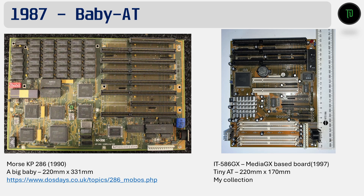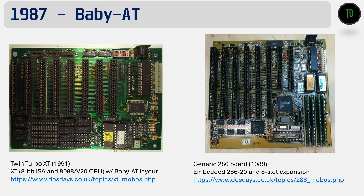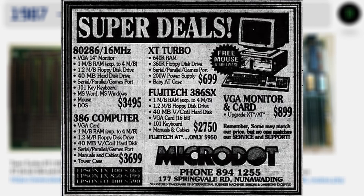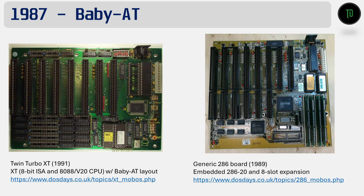Throughout the 1980s and 1990s, the Baby-AT sizing varied from the large size of the Morse KP286 at 331 mm to the itty-bitty late 90s Media GX board almost half the length at 170 mm. During this same time period, a few things were happening in the wider PC market which impacted the design and sale of these boards. Chipsets and ICs were being shrunken down and integrated into smaller packages, meaning boards could be smaller in size and cheaper to manufacture. During the early 1990s, it was common to see XT-based motherboards and systems being sold alongside the AT286 counterparts, in particular as the Taiwanese-based cloners got boards very small and performance was quite good.